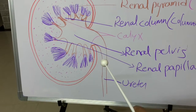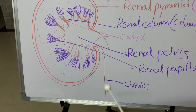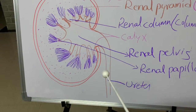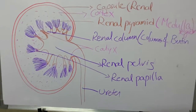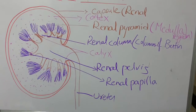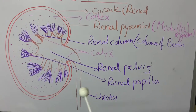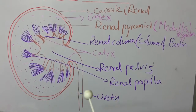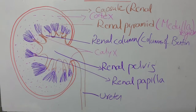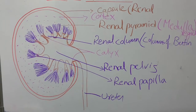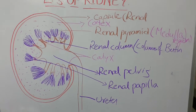The renal pelvis comes out of the kidney and forms a tube-like structure known as the ureter. The ureter is made up of smooth muscles, and by the peristaltic movement of these muscles, urine passes to the urinary bladder.